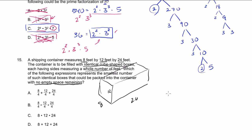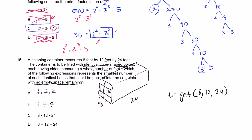The greatest common factor of 8, 12, and 24 is 4 — you can verify this by inspection. If the boxes are 4 feet on a side, then in the 8-foot dimension you'd fit 8 divided by 4, or 2 boxes. In the 12-foot dimension you'd fit 3 boxes. In the 24-foot dimension you'd fit 6 boxes.